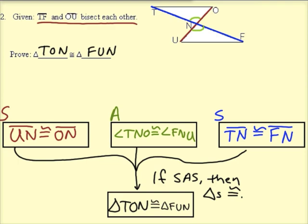Also, OU bisects TF. So for the red segments to be congruent, which segment is doing the bisecting and which is being bisected? That's an important question. In this case, TF is doing the bisecting and OU is being bisected.